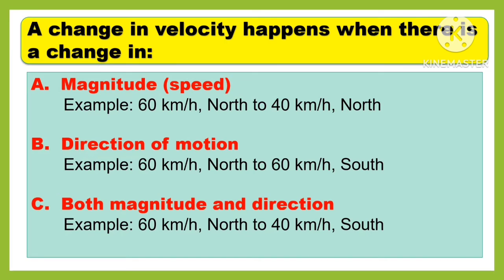A change in velocity happens when there is a change in: first, magnitude or the speed; second, the direction of motion; or third, both magnitude and direction.